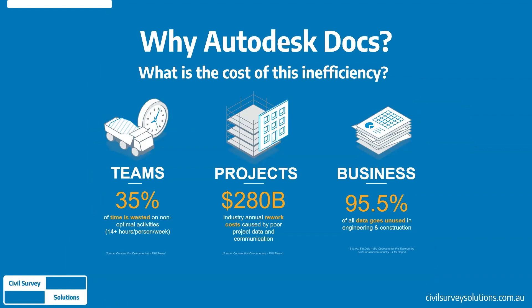To quantify project inefficiencies: in 2018, 600 construction leaders across the US, Australia, New Zealand, UK, and Canada were surveyed. The findings were published in a report titled 'Construction Disconnected.' A key takeaway is that nearly 96% of data goes unused in the engineering and construction industries — a staggering amount of data loss and inefficiency, leading to significant rework and asset risk. By managing projects through a properly implemented common data environment such as Autodesk Docs, you can make data far more accessible and useful, significantly reducing project costs and risks.